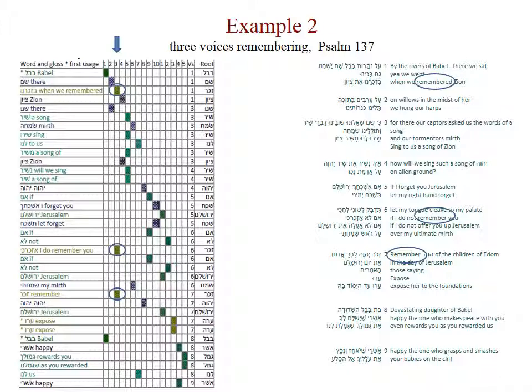Here is a second quite different example. Psalm 137 is the last reminder in the Psalter of the exile. God has three different voices remembering: the first person plural in the first section — 'When we remember Zion'; the first person singular in the second section — 'If I do not remember you'; and the second person singular imperative in the third section — 'Remember, Lord, of the children of Eden.'